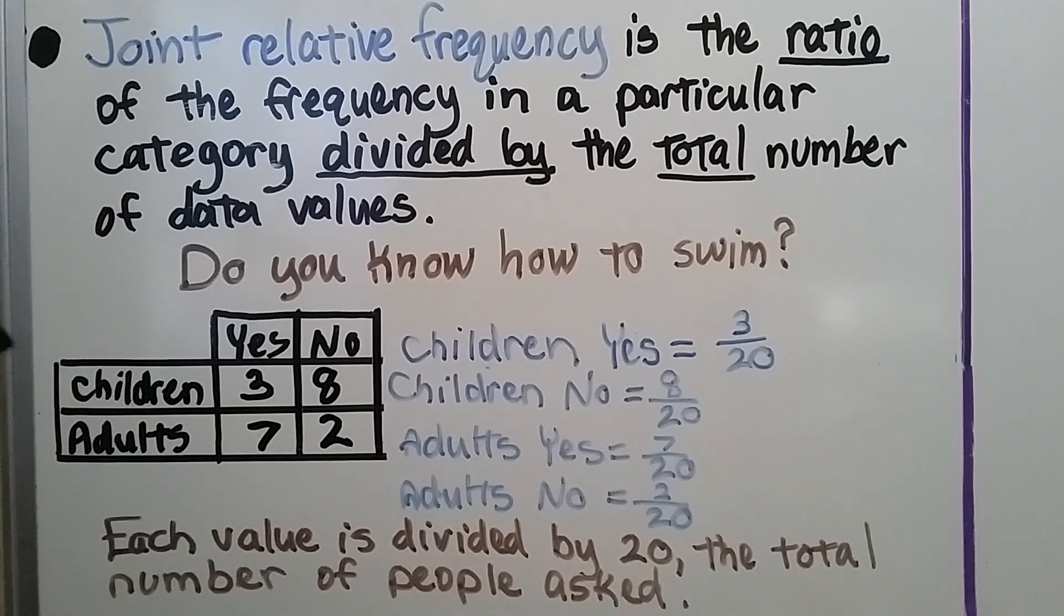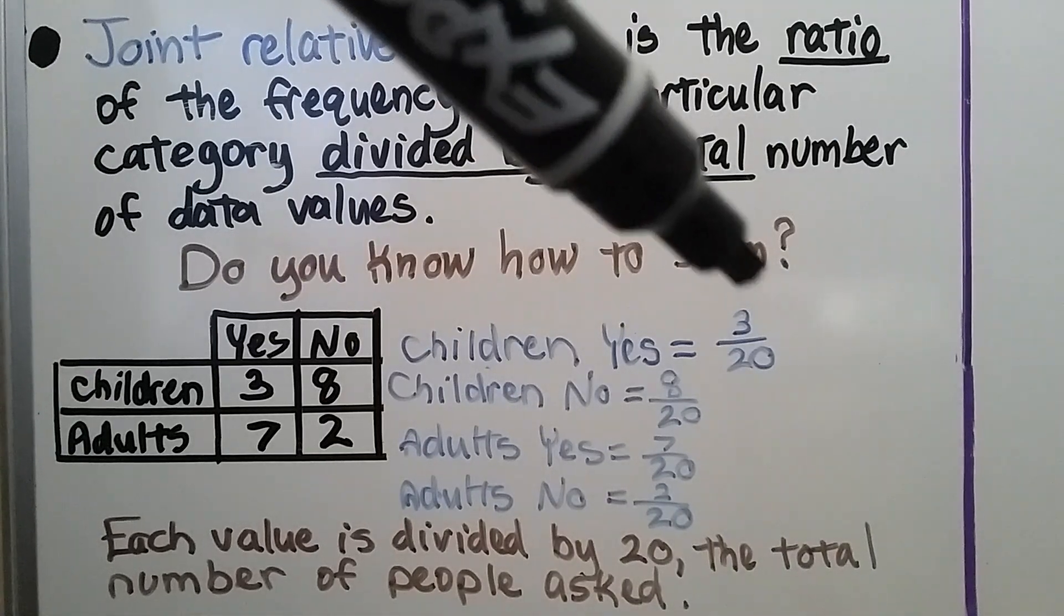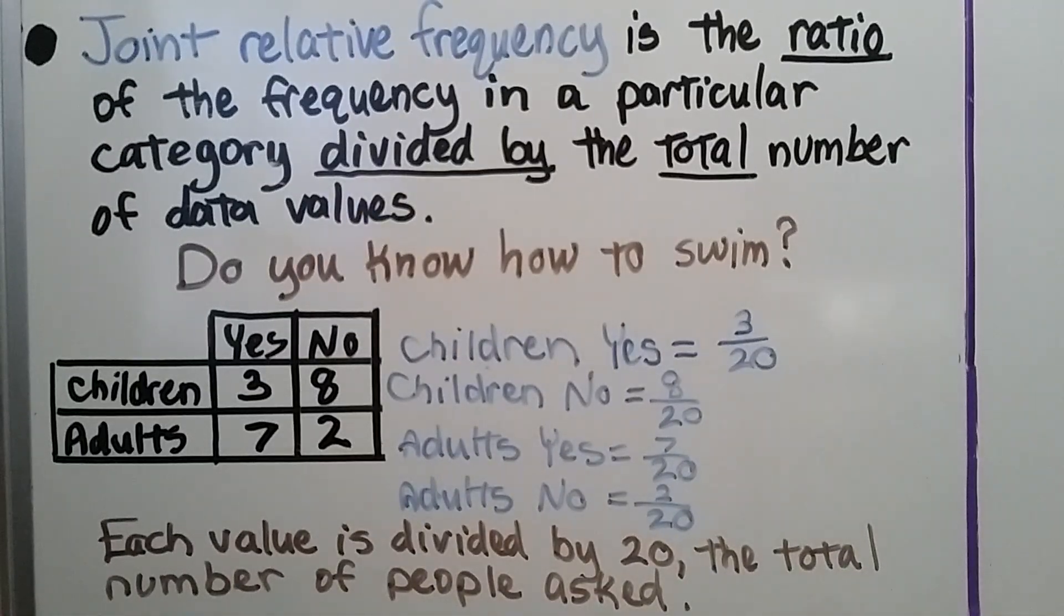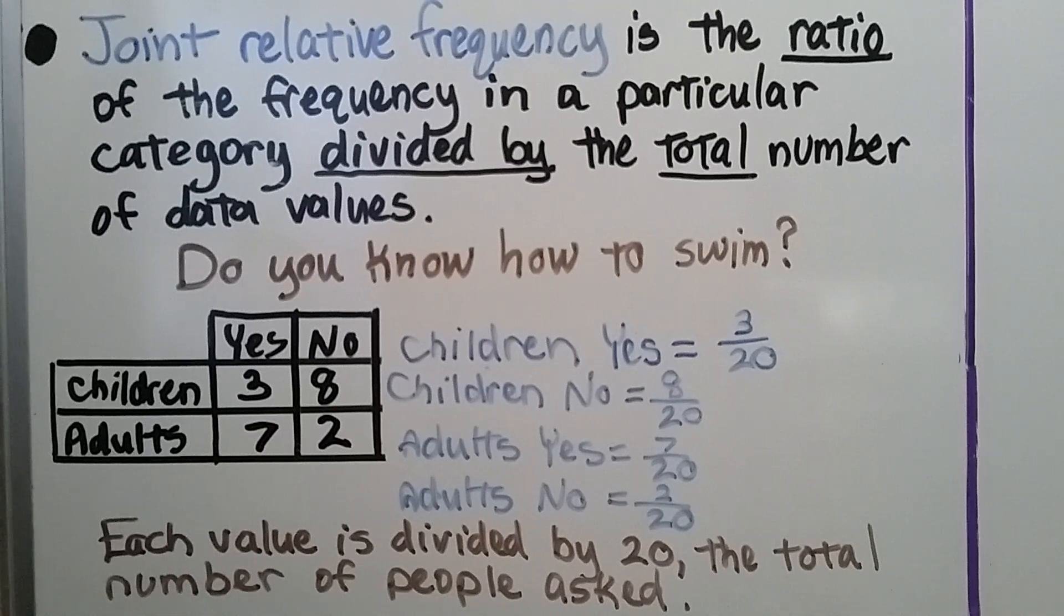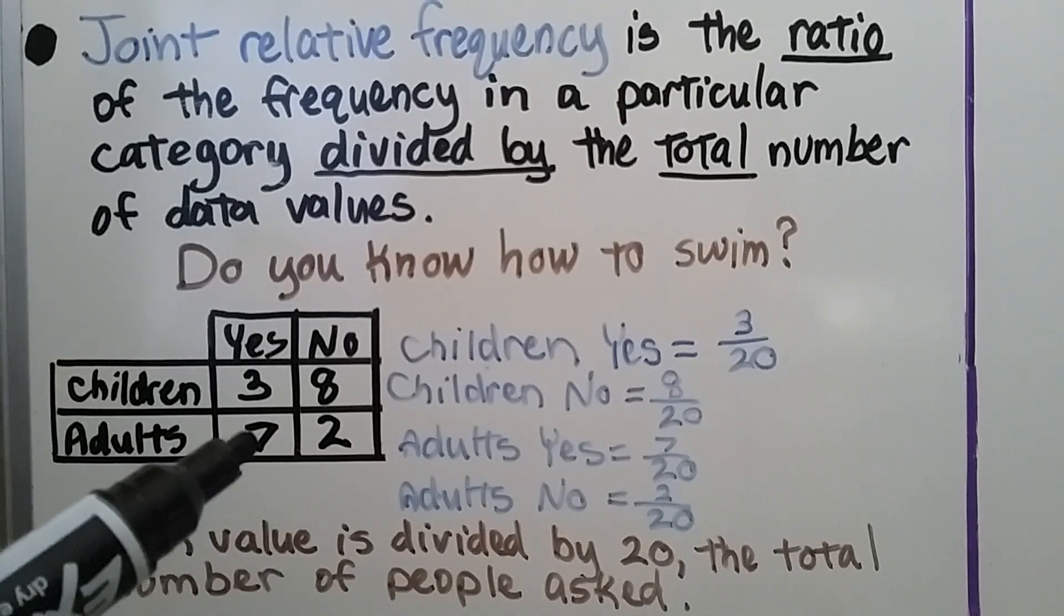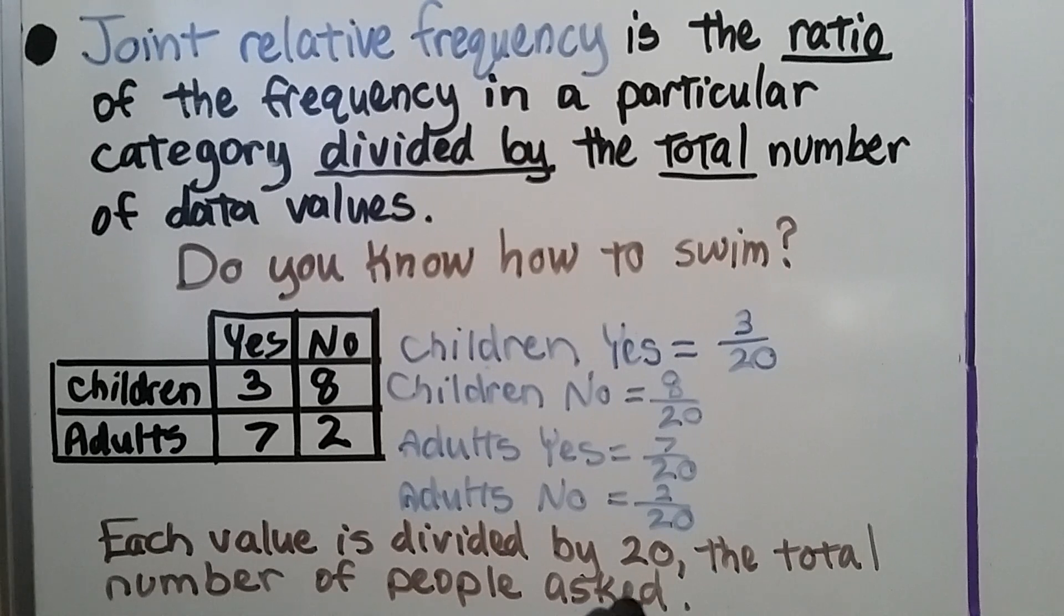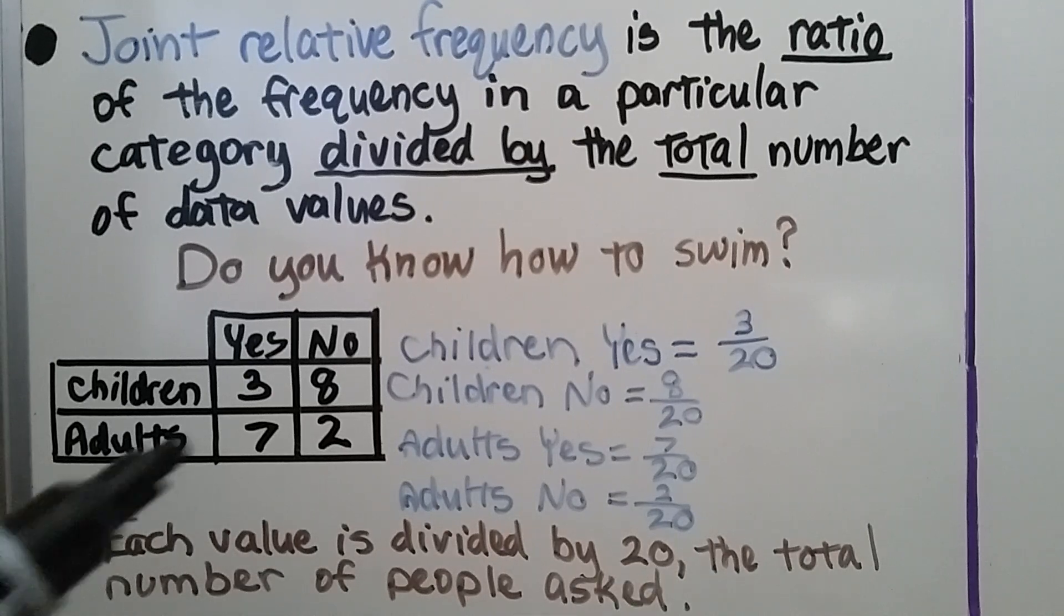There's 20 people asked. For children yes we have three-twentieths. For children no we have eight-twentieths. For adults yes we have seven-twentieths and for adults no we have two-twentieths. We took the amount and put it over the total number of people asked.